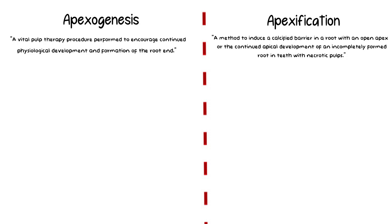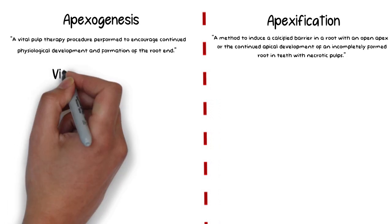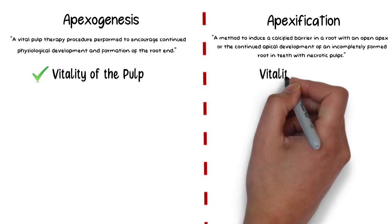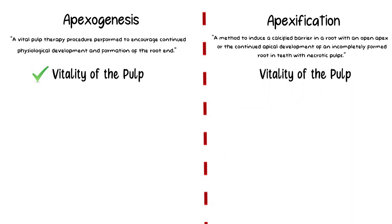In simple words, Apexogenesis is a vital pulp therapy procedure, meaning that the vitality of the pulp is left intact. In fact, the goal of Apexogenesis is to maintain the vitality of the pulp, while in Apexification, the vitality of the pulp is lost.